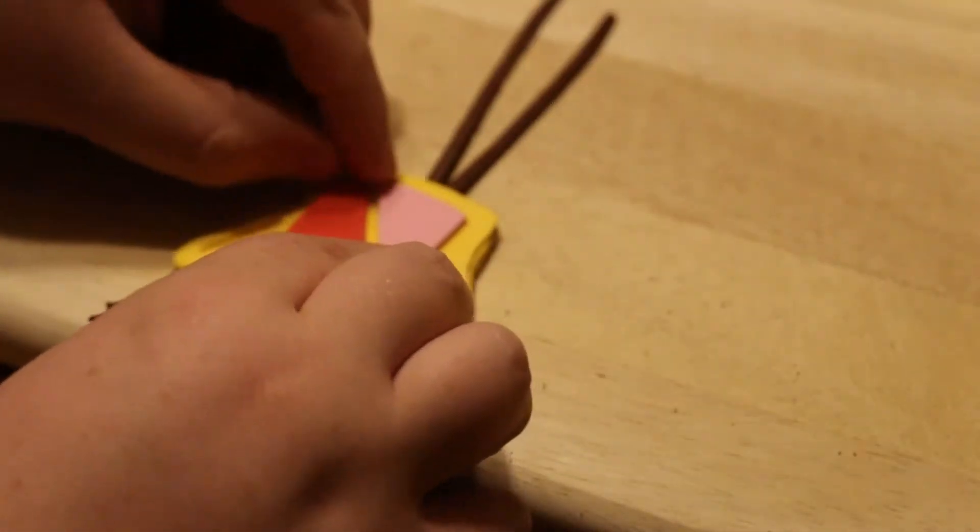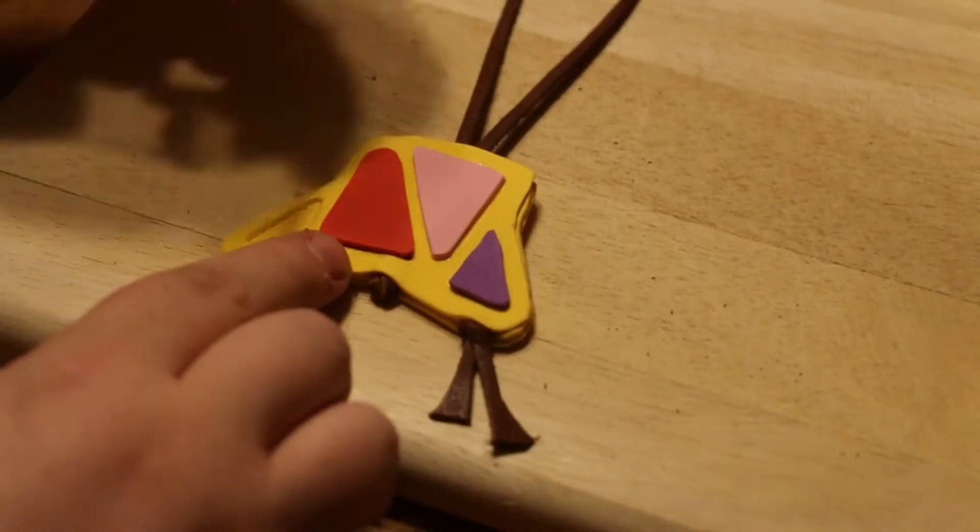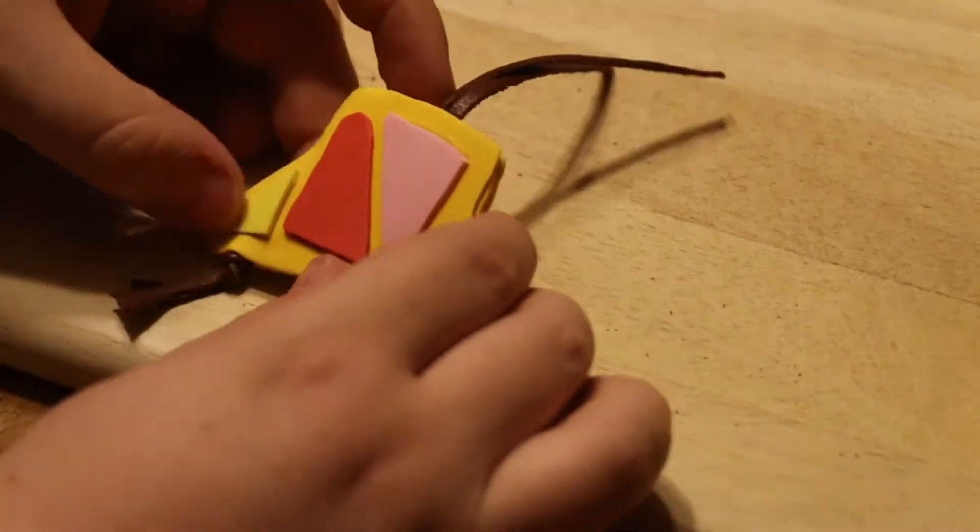It's time to add those foam pieces you cut out earlier. Make sure they go on in the right order if you want it to look like the real amulet.